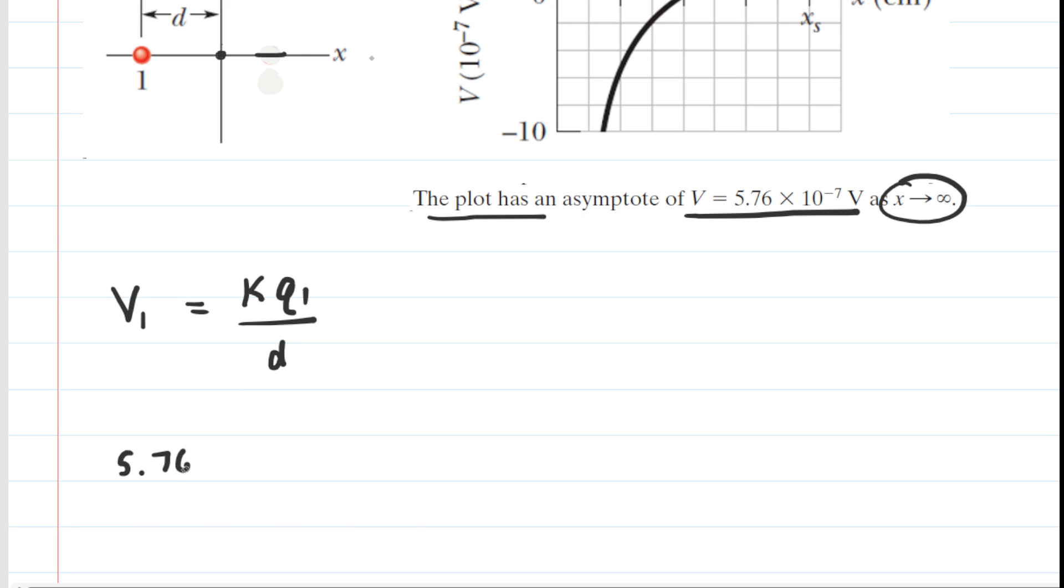V1 is the potential produced by Q1. And again, only Q1 is present right now because we've moved Q2 infinitely far away. So only Q1 produces potential.